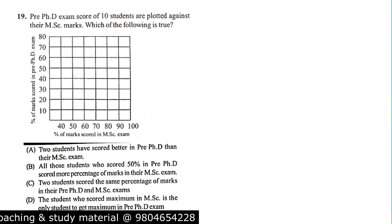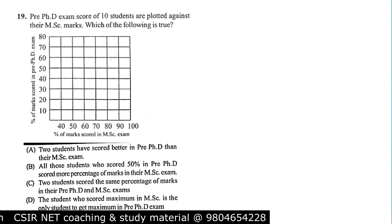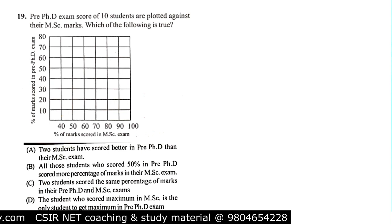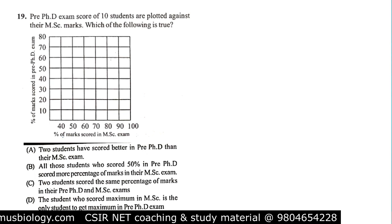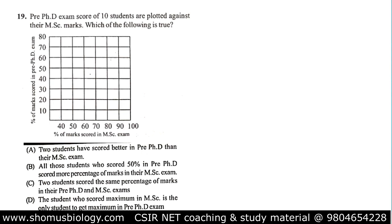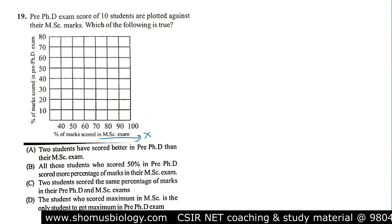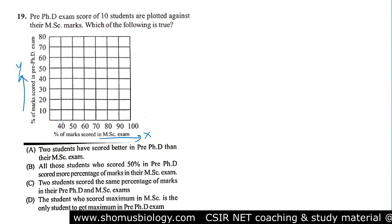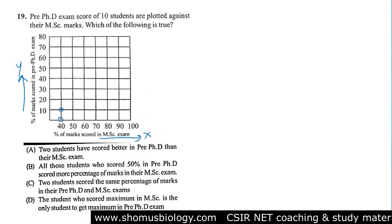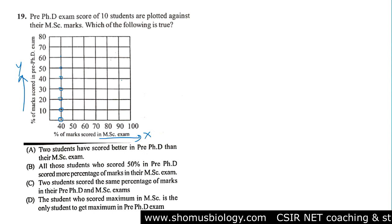Now let's move to another problem. Pre-PhD exam scores of 10 students are plotted against their MSc marks. The x-axis shows MSc marks percentage and the y-axis shows percentage marks in the pre-PhD exam. For example, at 40% in MSc the pre-PhD score is around 10–30. You need to have a clear idea of where the marks fall, even though specific values are not always explicitly mentioned.